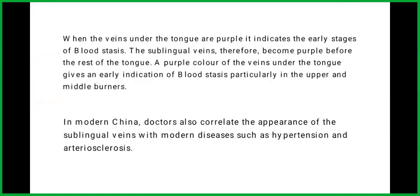When the veins under the tongue are purple, it indicates the early stages of blood stasis. The sublingual veins therefore become purple before the rest of the tongue. A purple color of the veins under the tongue gives an early indication of blood stasis, particularly in the upper and middle burners.